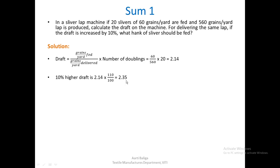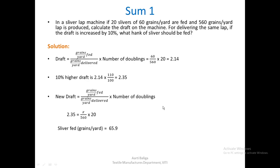With the draft increased to 2.35, we need to find what hank of sliver should be fed to still deliver a lap of 560 grains per yard. Using the same draft formula and keeping the lap weight and number of doublings constant, we solve: 2.35 = x ÷ 560 × 20, and we get the sliver feed weight as 65.9 grains per yard.